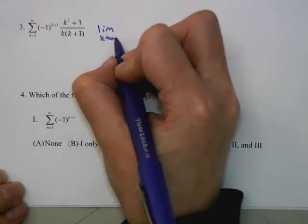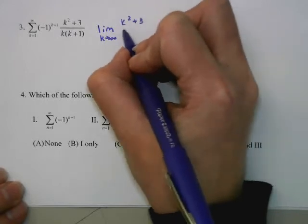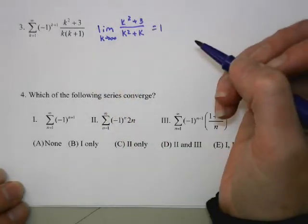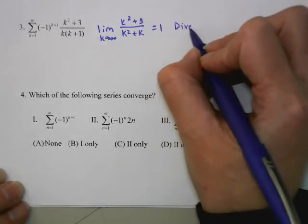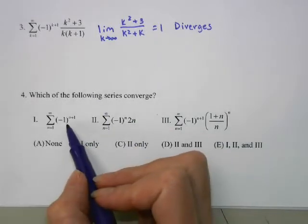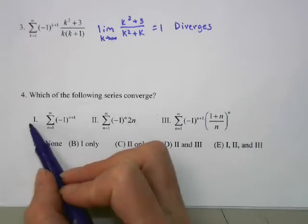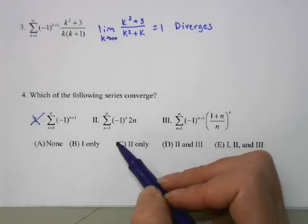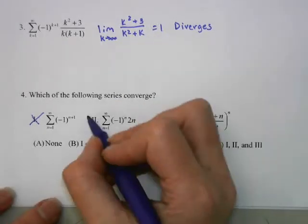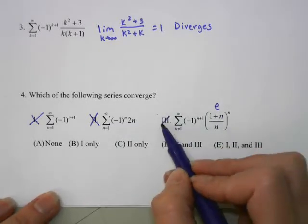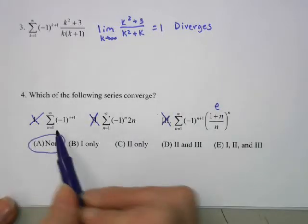Now consider the limit as k goes to infinity of (k²+3)/(k²+k) — that equals 1. If the limit is not zero, the series diverges whether it is alternating or not; it fails the divergence test. Looking at the following series: −1 to the 1 is just −1+1−1, so that diverges. For (−1)^(2n), the limit is not zero, so it diverges. And the series with e: the limit as this goes to infinity is e, which also diverges. So the answer is none of these converge.